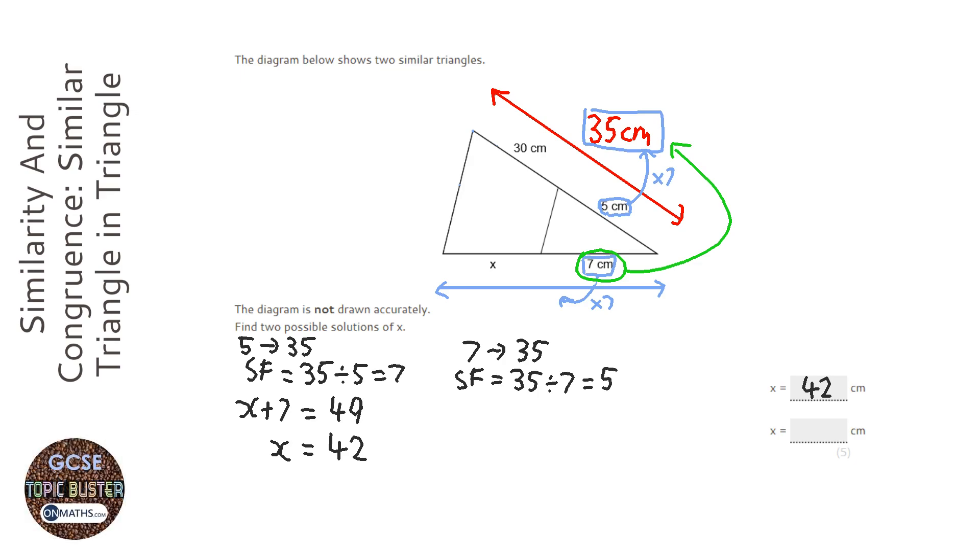So if the scale factor is 5, then we're going to look at this top one here, the 5 centimeters, and times that by 5 to get to the x plus 7. So it would be x plus 7 equals 5 times 5 which is 25, and then take away the 7 from both sides which would be 18.